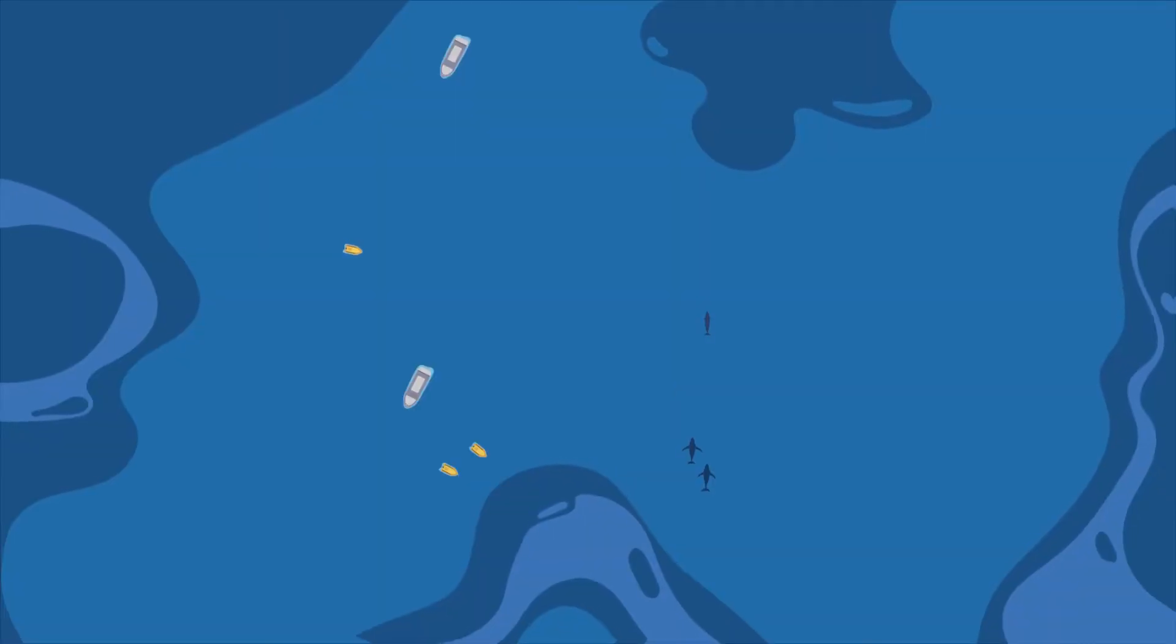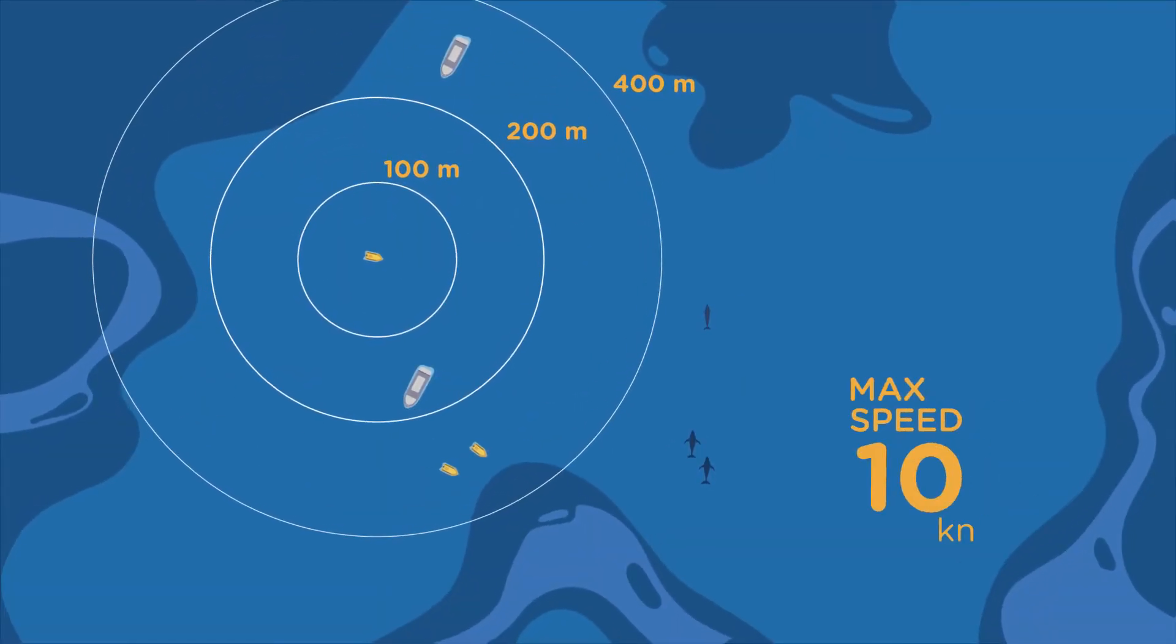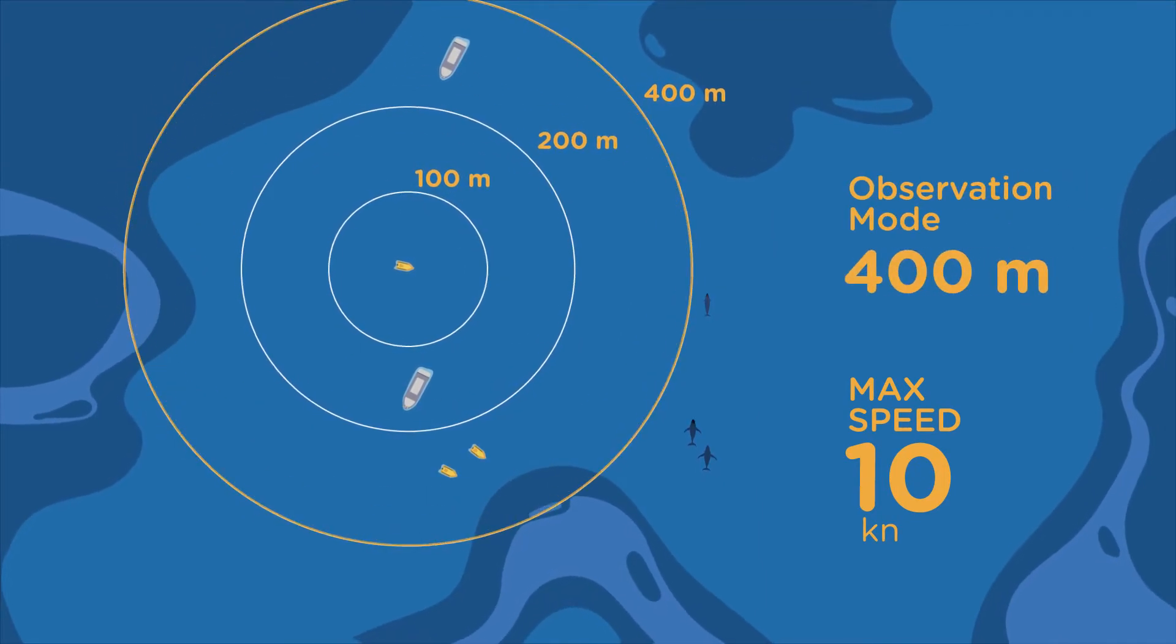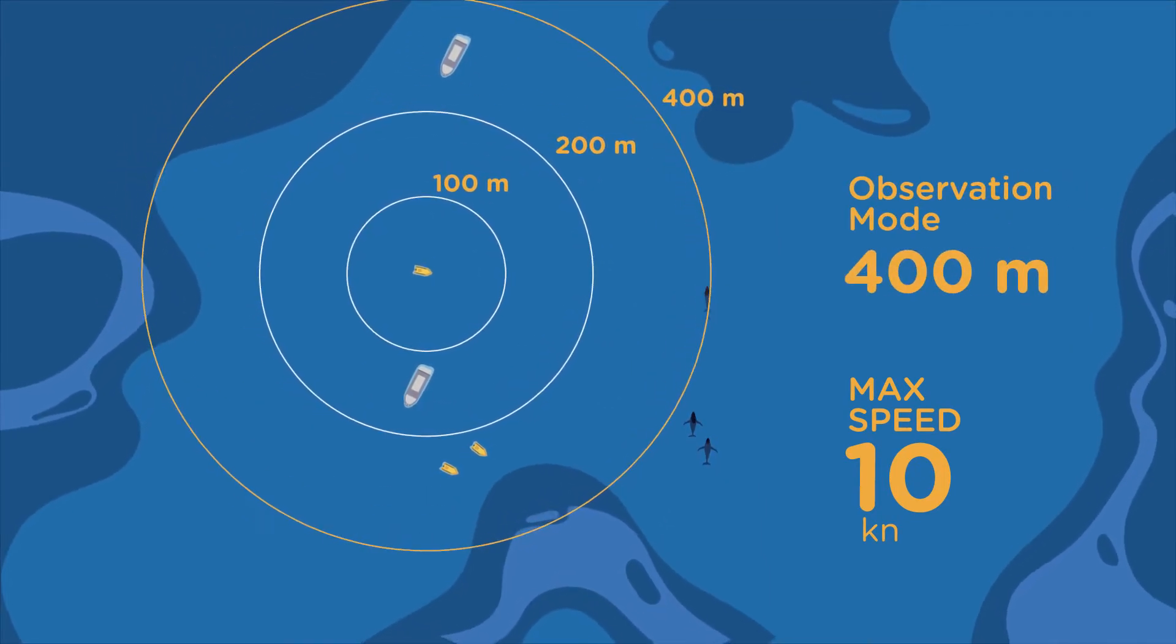But if there are less than 10 boats, enter the area by sailing at a maximum speed of 10 knots until you are in observation mode or 400 meters from a whale.